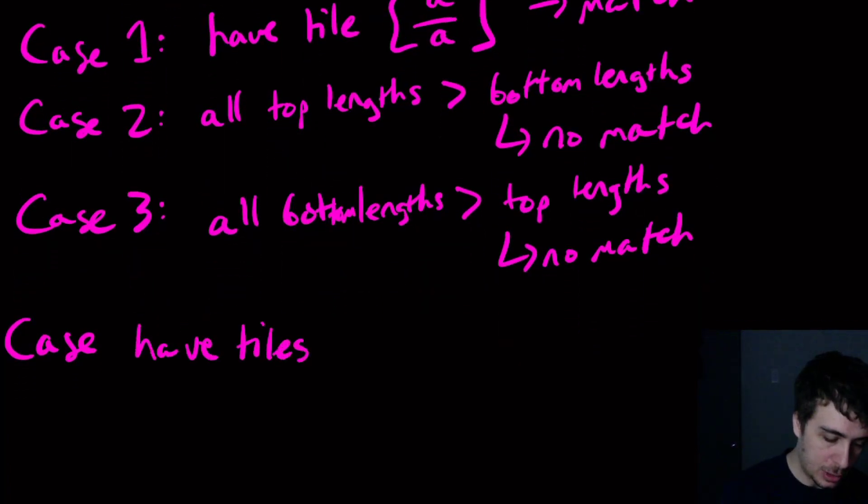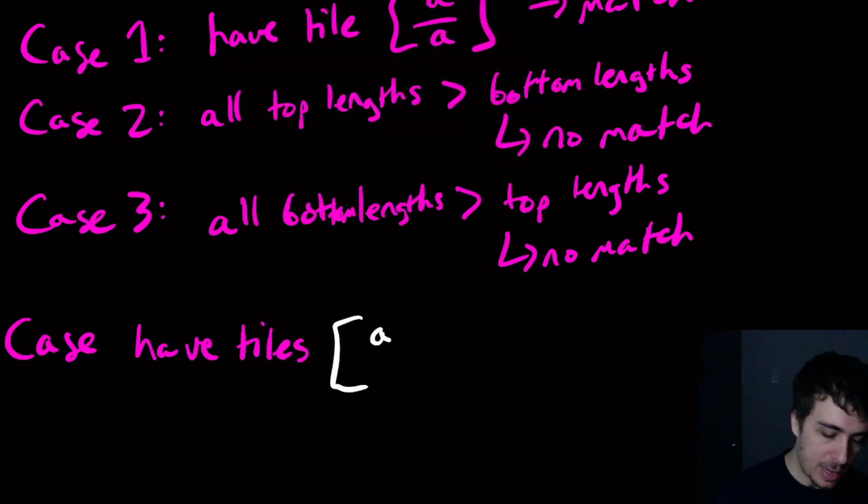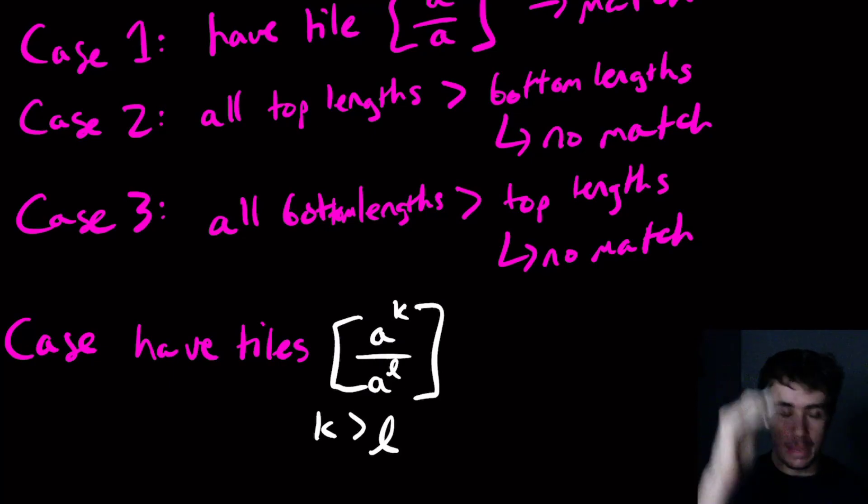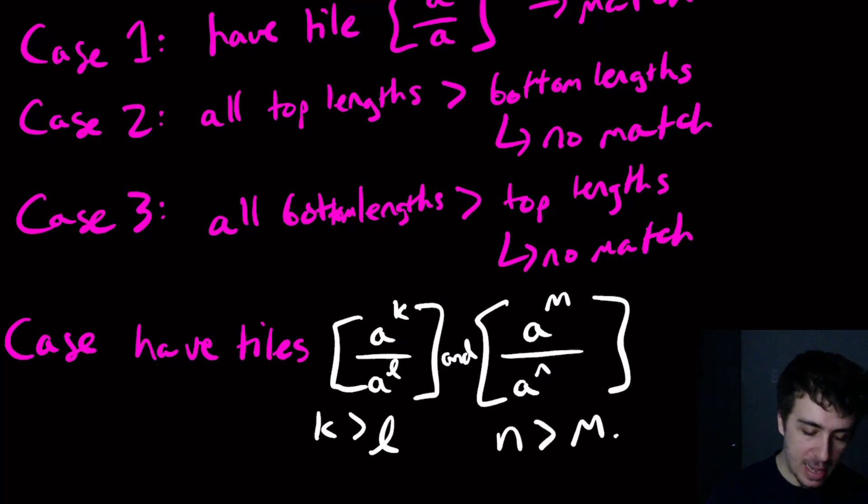Let's say we have A to the K, A to the L on the bottom, where K is bigger than L. So this one, the top is bigger than the bottom. And here, what if we have A to the M and A to the N, where N is bigger than M.